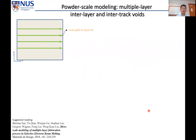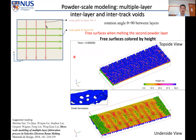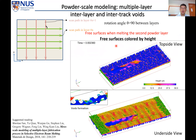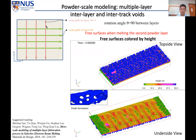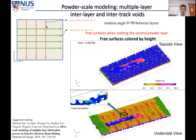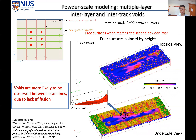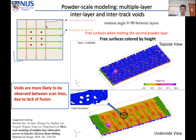We can also simulate multi-layer, multi-track manufacturing processes with any rotation angle, reproducing them in simulation. In a 90-degree rotation case, the free surface view of the second layer shows how lack-of-fusion voids are formed. The shape, size, and spatial distribution of these lack-of-fusion voids all agree well between simulation and experiments.